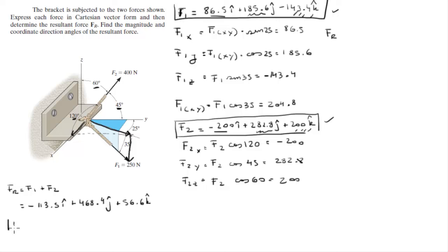To find the coordinate direction angles, we need to find the magnitude, and you do so by doing the square root of the square of the sum of the components, which comes out to be 485.3.